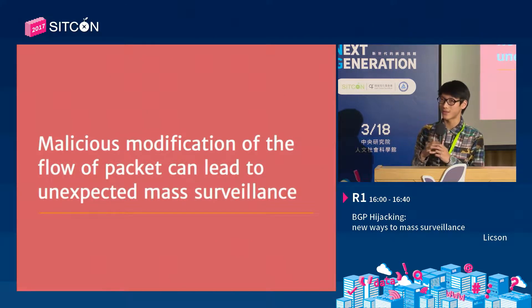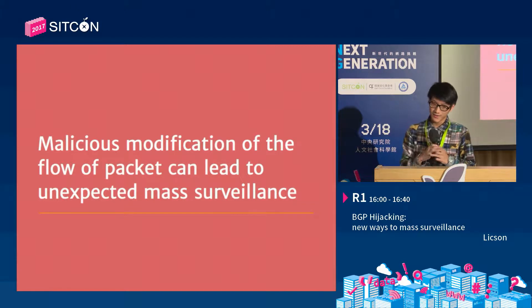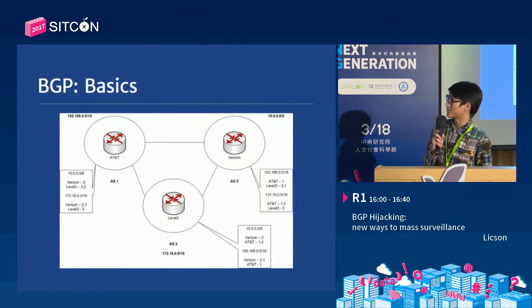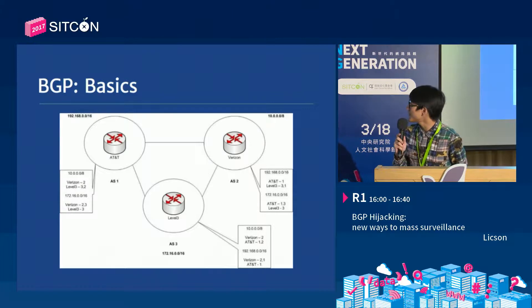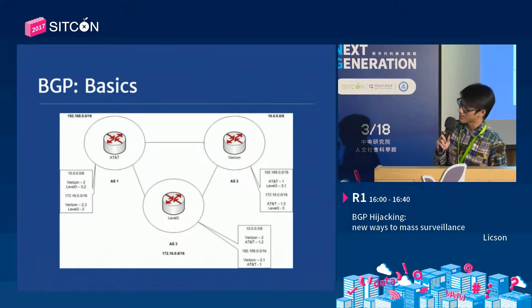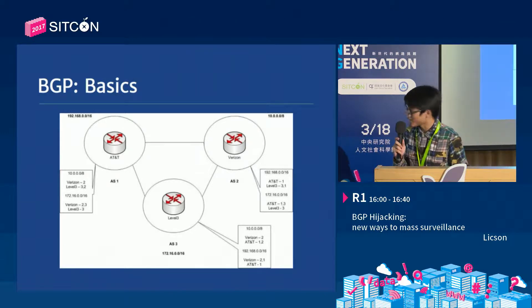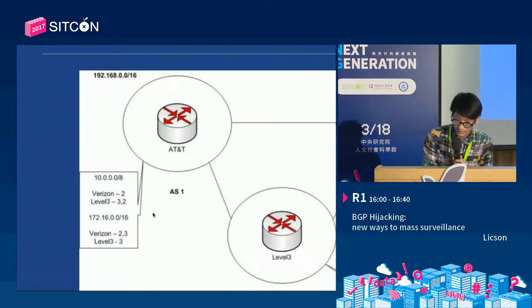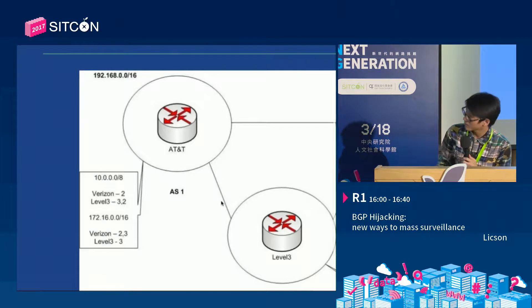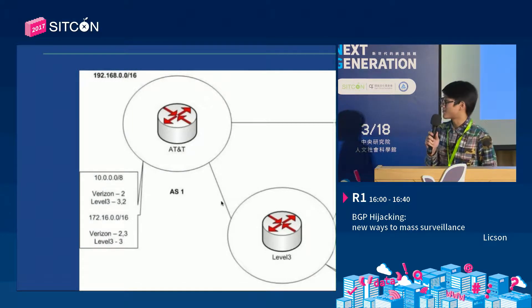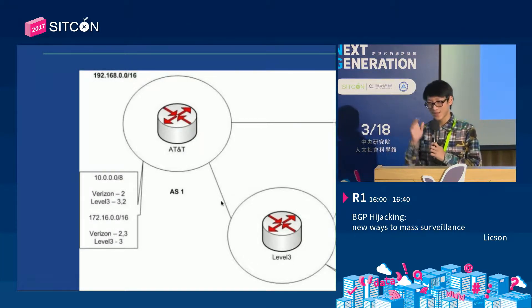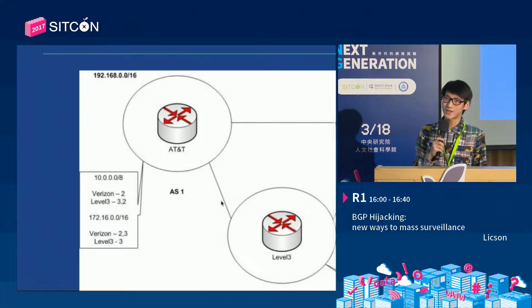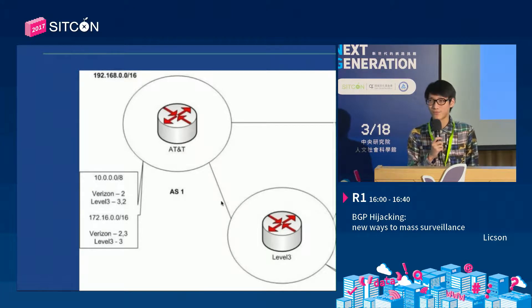Let's start talking about the basics of the BGP protocol. In this network, we have three sub-networks and we call them AS1, AS2, and AS3. An AS, which stands for Autonomous System, stands for a boundary for a group of routers, and the number is usually assigned to large networks like ISPs and large enterprises.